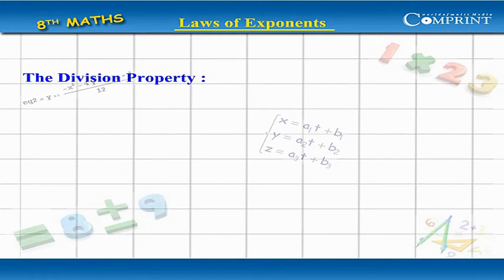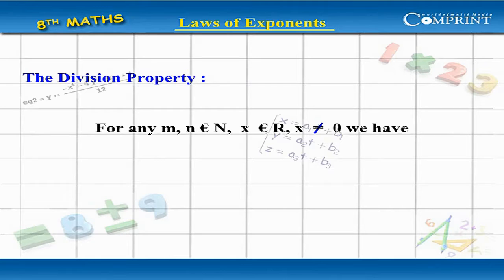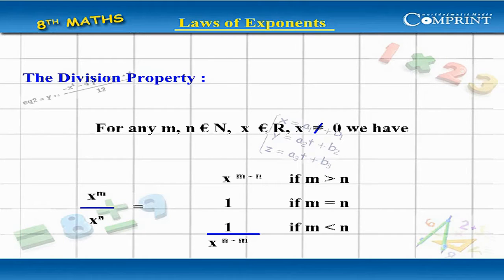The Division Property: for any m, n belonging to capital N and x belonging to R with x not equal to 0, we have x to the power m divided by x to the power n equal to: x to the power of m minus n if m is greater than n; 1 if m equals n; and 1 by x to the power of n minus m if m is less than n.